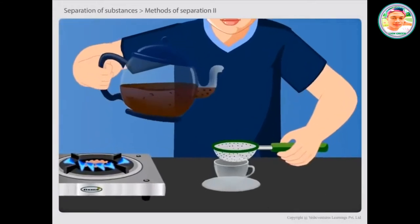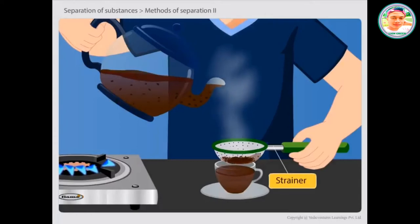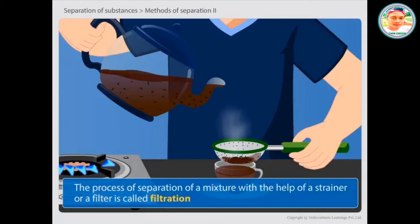Now take a strainer and pour the tea through it. Observe both tea and the strainer. What do you see in the strainer? You will see that all the tea leaves remain in the strainer. This process of separation of a mixture with the help of a strainer or a filter is called filtration.